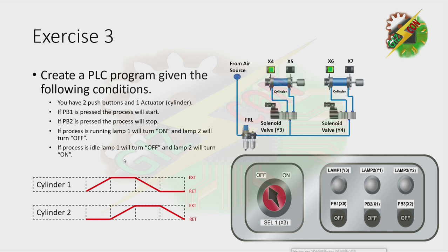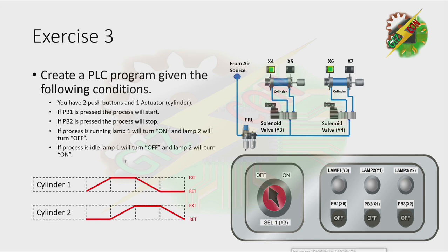Exercise 3. Create a PLC program given the following conditions. You have two push buttons and one actuator. If PB1 is pressed, the process will start. If PB2 is pressed, the process will stop. If the process is running, LMP1 will turn on and LMP2 will turn off. If the process is idle, LMP1 will turn off and LMP2 will turn on. This will be the indicator of the status of the cylinder — at one point the cylinder extends, and at another point the cylinder retracts.